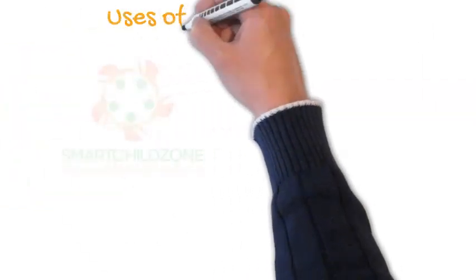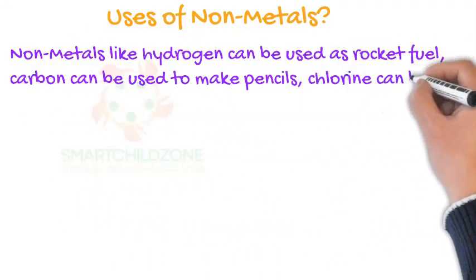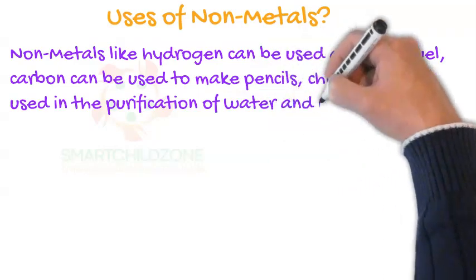Uses of non-metals. Non-metals like hydrogen can be used as rocket fuel, carbon can be used to make pencils, chlorine can be used in the purification of water, and many household items are made of non-metals.